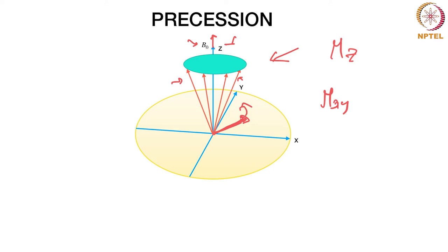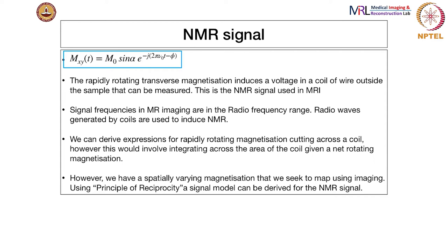This magnetization is rapidly rotating with frequency nu-0 in the plane. If you put a coil of wire here, the rotating magnetization will induce a current. That current is your NMR signal. The origin of the NMR signal is the rotating transverse magnetization. Mx and My have a sinusoidal dependence, and we can write them in complex form where this nu-0 is the Larmor frequency.